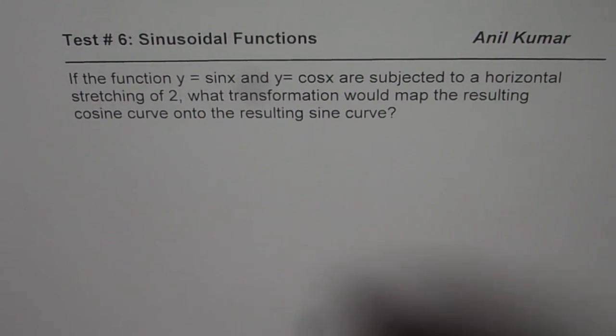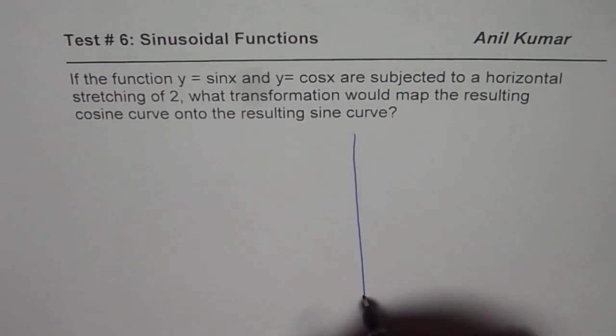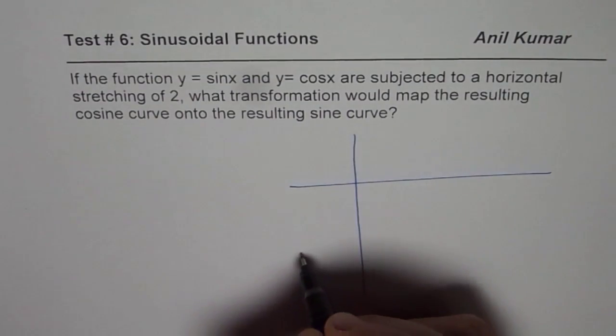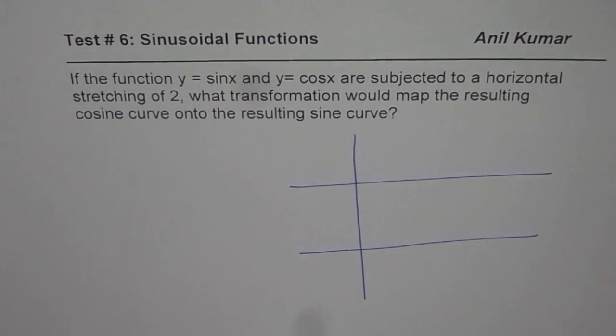what transformation would map the resulting cosine curve into the resulting sine curve? So that is the question. Let's try to understand how they are actually related. I will just draw these two functions.